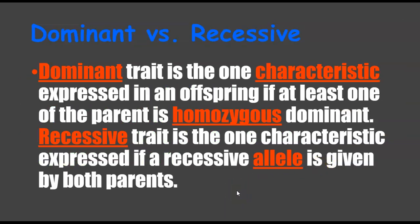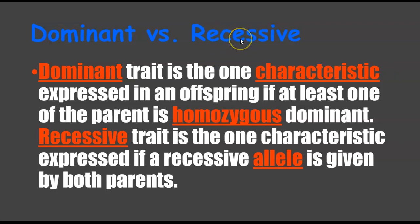Dominant is the characteristic expressed by an offspring when at least one parent is homozygous dominant — that's the capital letter. Recessive is the characteristic expressed only when a recessive allele is given by both parents, meaning you'd need lowercase e from both. So for a homozygous dominant capital R, capital R, the offspring expresses that dominant trait. For recessive, both sets of parents must provide lowercase e.